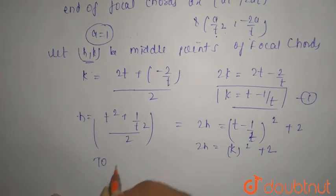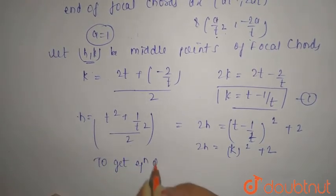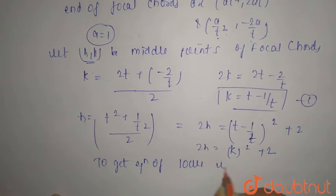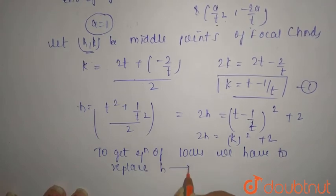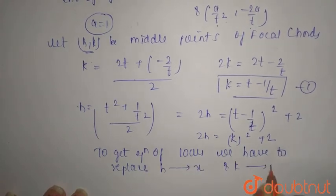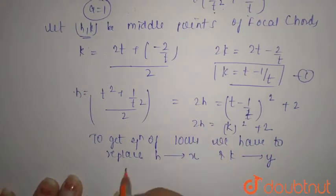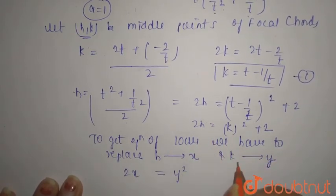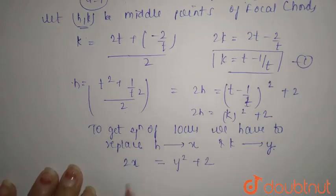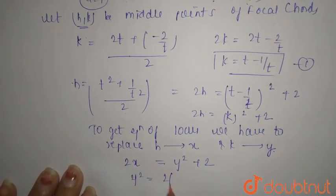we replace h with x and k with y. This gives 2x = y² + 2, which simplifies to y² = 2(x - 1). This is the equation of the locus. I hope it's clear, thank you.